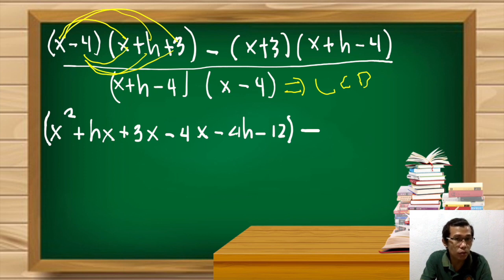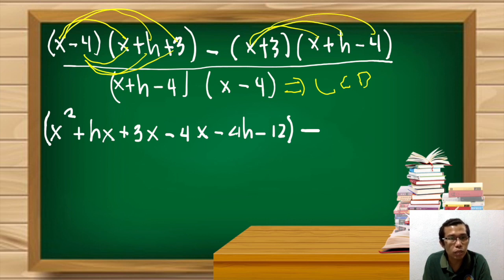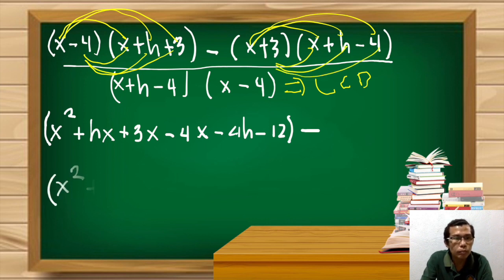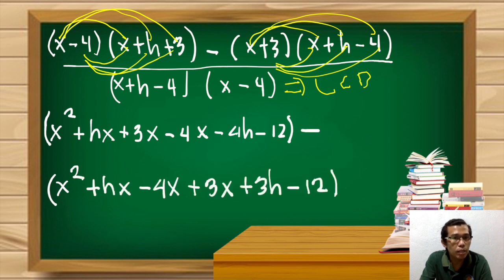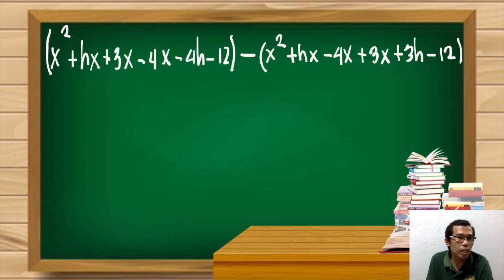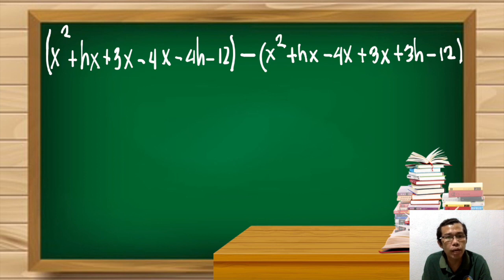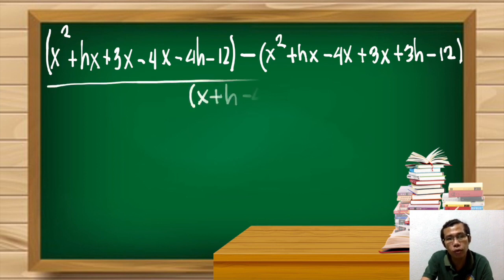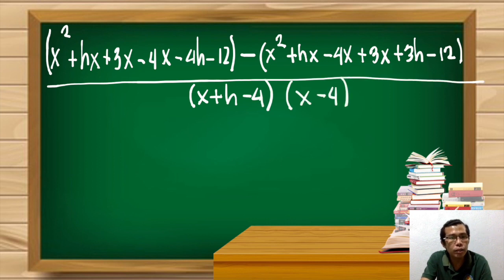Distributing the second product (x+3)(x+h−4) gives x² + hx − 4x + 3x + 3h − 12. Combining these, the full numerator is the quantity (x² + hx + 3x − 4x − 4h − 12) minus the quantity (x² + hx − 4x + 3x + 3h − 12), all over the denominator (x+h−4)(x−4).